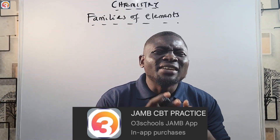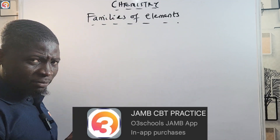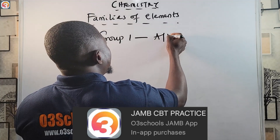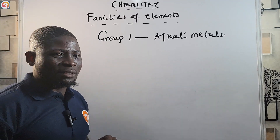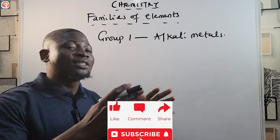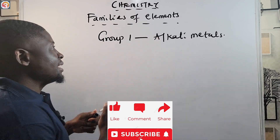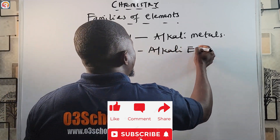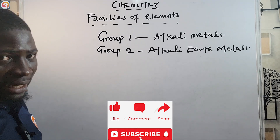These families of elements have designations. Group one elements are called the alkali metals. Group two elements are called the alkaline earth metals. We will deal with all the families of elements one after the other in episodes to come.